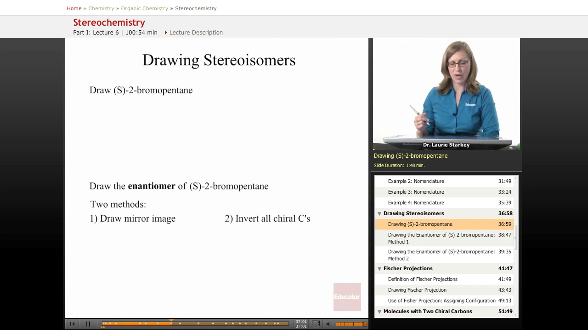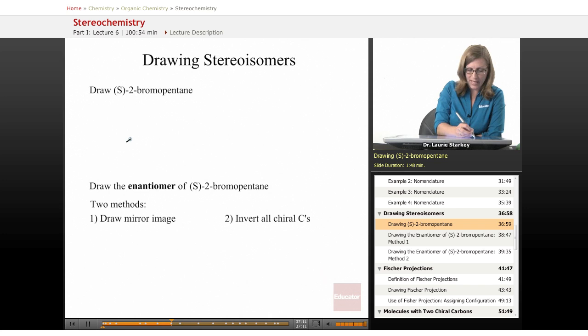Let's get some practice drawing stereoisomers. Let's say we were asked to draw S-2-bromopentane. How could we do that? Well, we could draw pentane, one, two, three, four, five. So there's pentane.